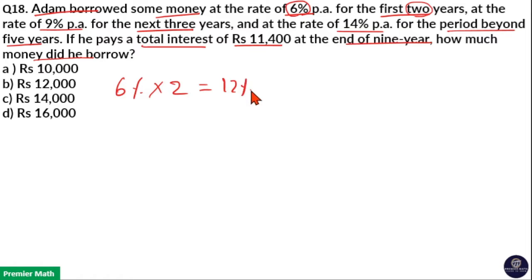For the next 3 years, he paid 9% per annum. For 9% into 3 years, total 27% he paid for next 3 years.